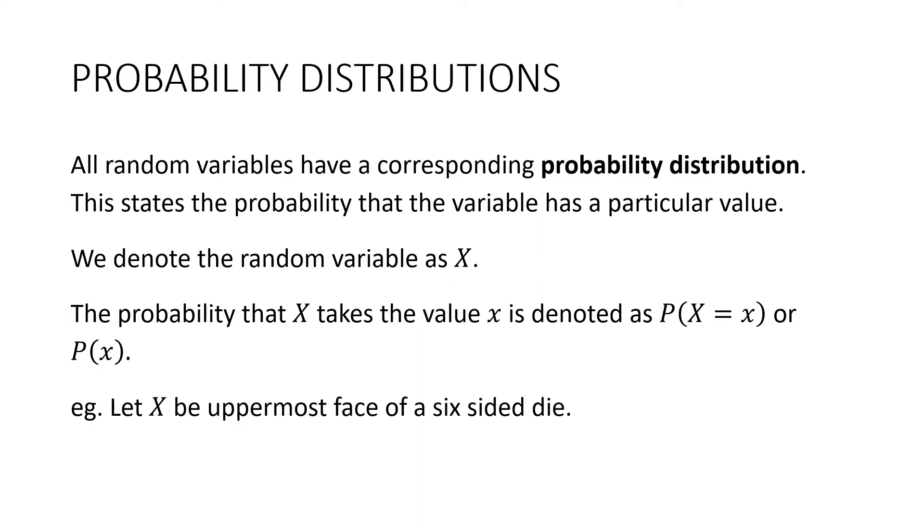So let capital X be the uppermost face of a six-sided die. What is the probability that that uppermost face is a six? Well, it's one-sixth. What is the probability that the uppermost face lies between a three, but not equal to a three, up to and including a six? So it could be four, five, or six. Well, that's a half. So can you see how it's similar to probability, but it's just slightly different?